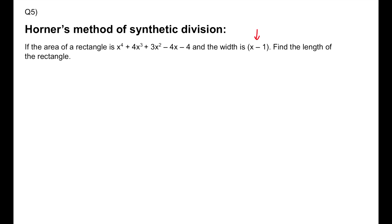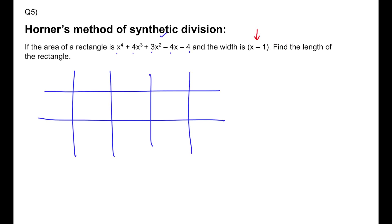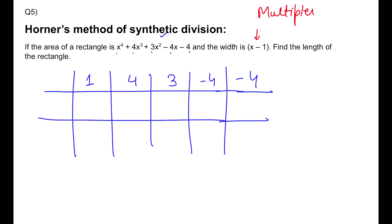You need to know this process irrespective of whether you use it or not. Make as many columns as you have terms — here you have 5 terms, so make 5 columns — and make 3 rows. In the first row, write down all the numerical coefficients of the dividend. Starting from x to the power 4, the coefficients are: 1, 4, 3, −4, and −4. Then find your multiplier, which is the value of x from equating the divisor to 0. For (x−1)=0, x=1, so the multiplier is 1.